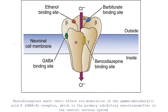Here is a pictorial representation showing the benzodiazepine receptor site and the GABA binding site. The GABA receptor exerts its effect as a primary inhibitory neurotransmitter in the CNS. Benzodiazepines act by modulating this GABA-A receptor to potentiate inhibition.